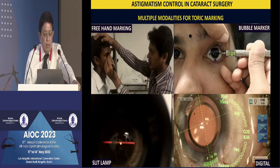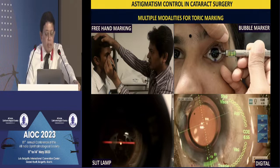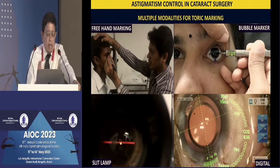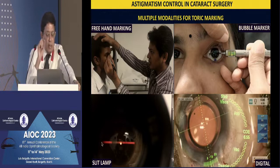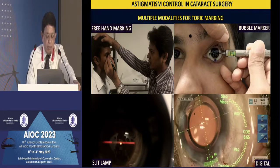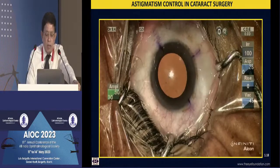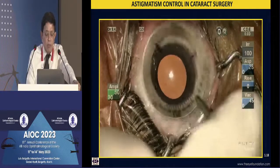The very fact that so many different marking methods are available essentially shows that none are absolutely accurate. Whatever you are comfortable with, standardize it and stick to it. If you do not have a digital marking system, marking on the slit lamp with the pupil undilated — making a horizontal slit and using a 26-gauge needle to create a small subconjunctival hemorrhage on either side — tells you exactly where the 0–180 degree axis is. If you have a digital overlay system, that would be the way to go.